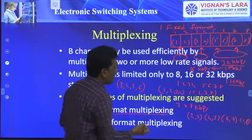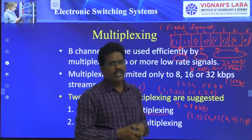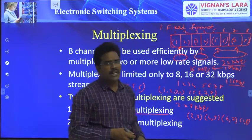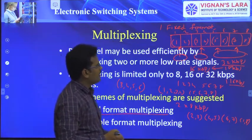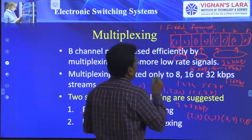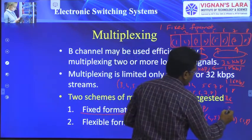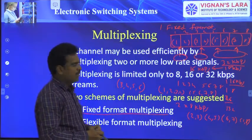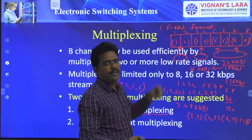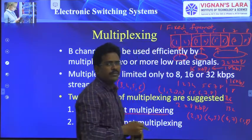In fixed format multiplexing, you cannot adjust the sets — 1,2 is the 1st set, 3,4 is the 2nd set, 5,6 is the 3rd set, and 7,8 is the 4th set. The drawback is that sometimes it is not flexible enough — for example, if you have one 8 kbps, two 16 kbps, and one 32 kbps, you cannot transmit them all using fixed format. So you go for flexible format, where you can interchange and use any bit positions for any bit rates — for instance, 3,4,5,6 as one set. That is called flexible format multiplexing.